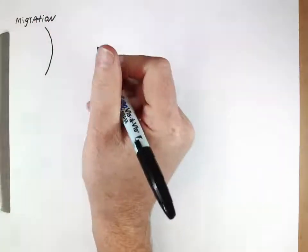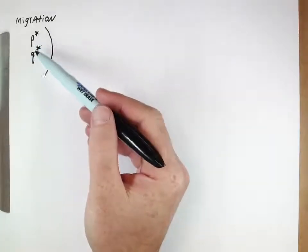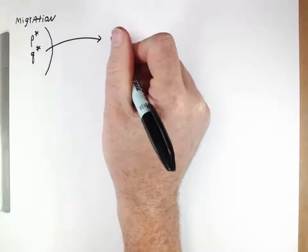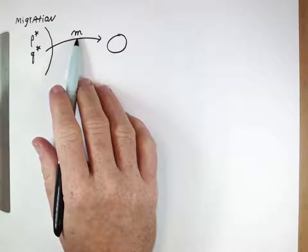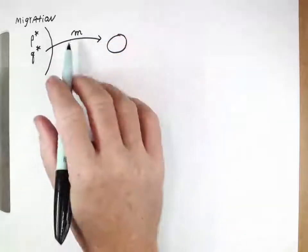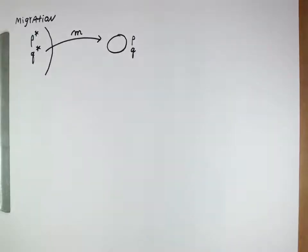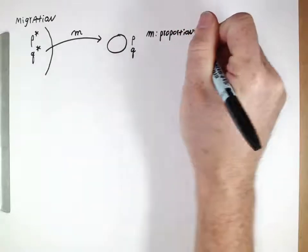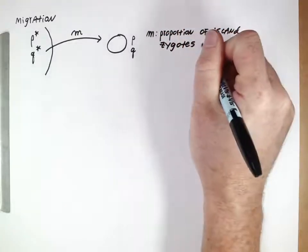The system we're going to think about is the most simple system. We're going to have a mainland population, and we'll represent the frequencies of the capital A and lowercase a alleles by P* and Q*. This mainland population is going to send individuals to an island population, and the number of individuals is represented by the value M. The frequencies of the alleles on the island will be the P and Q we're familiar with, and M is the proportion of island zygotes that are from the mainland.